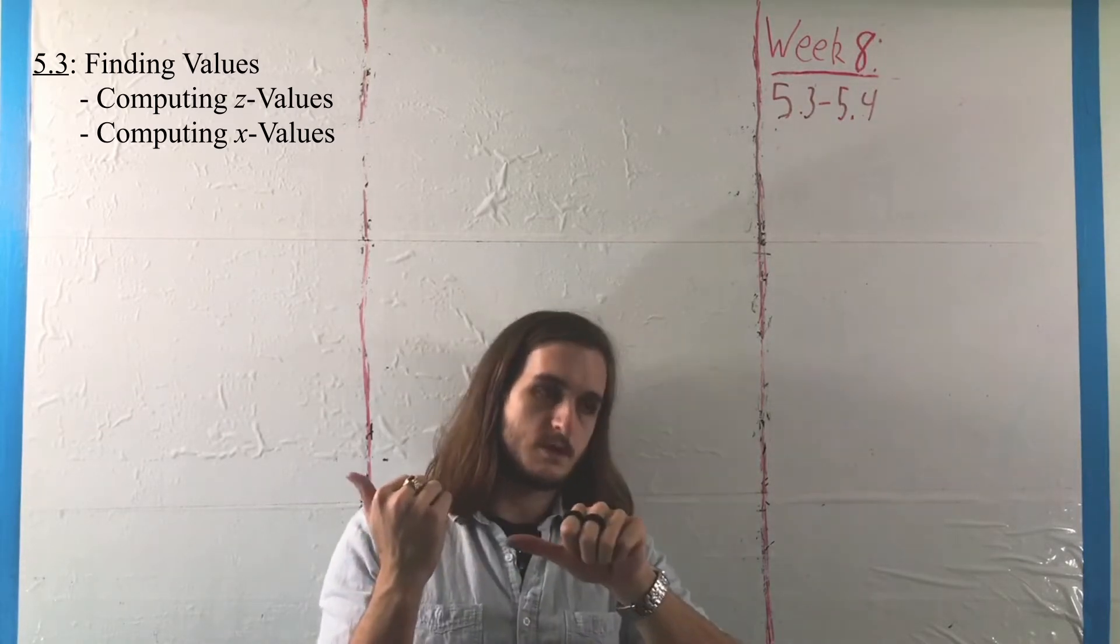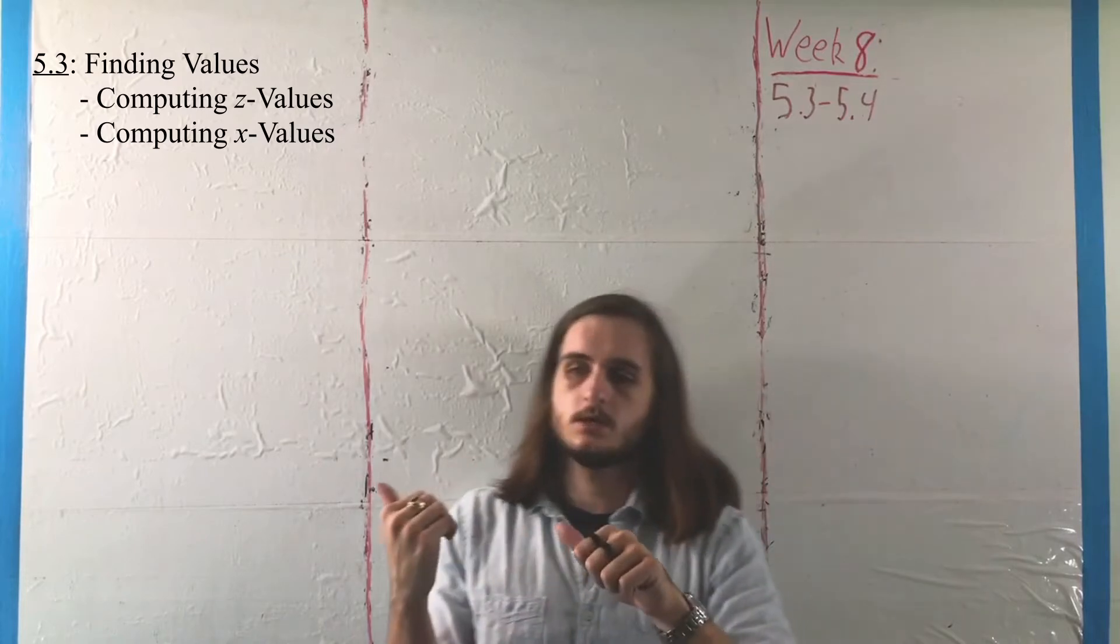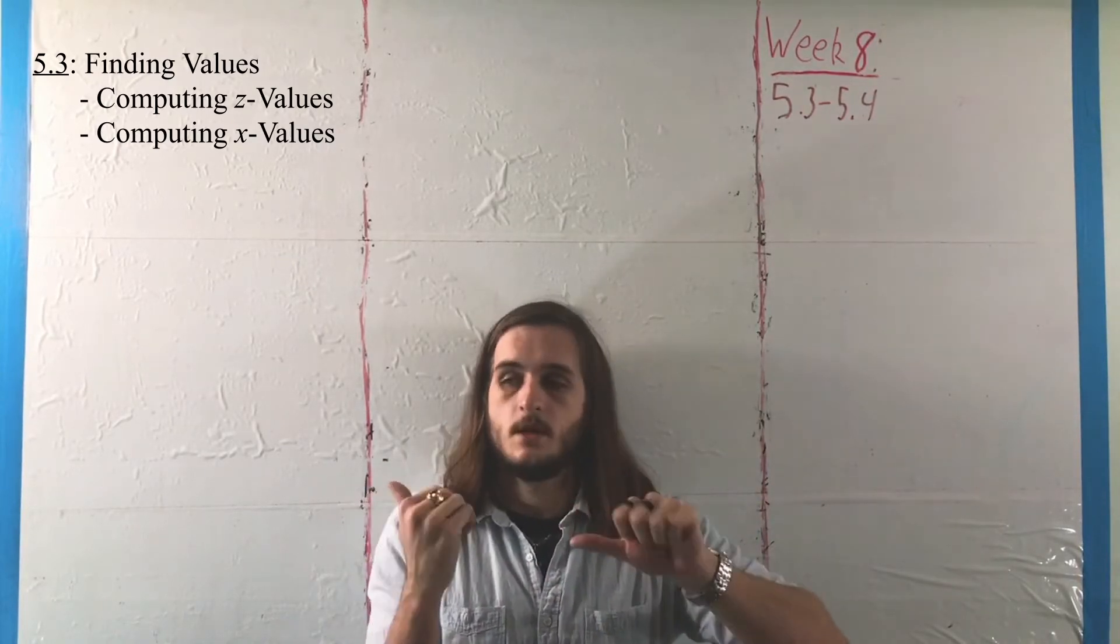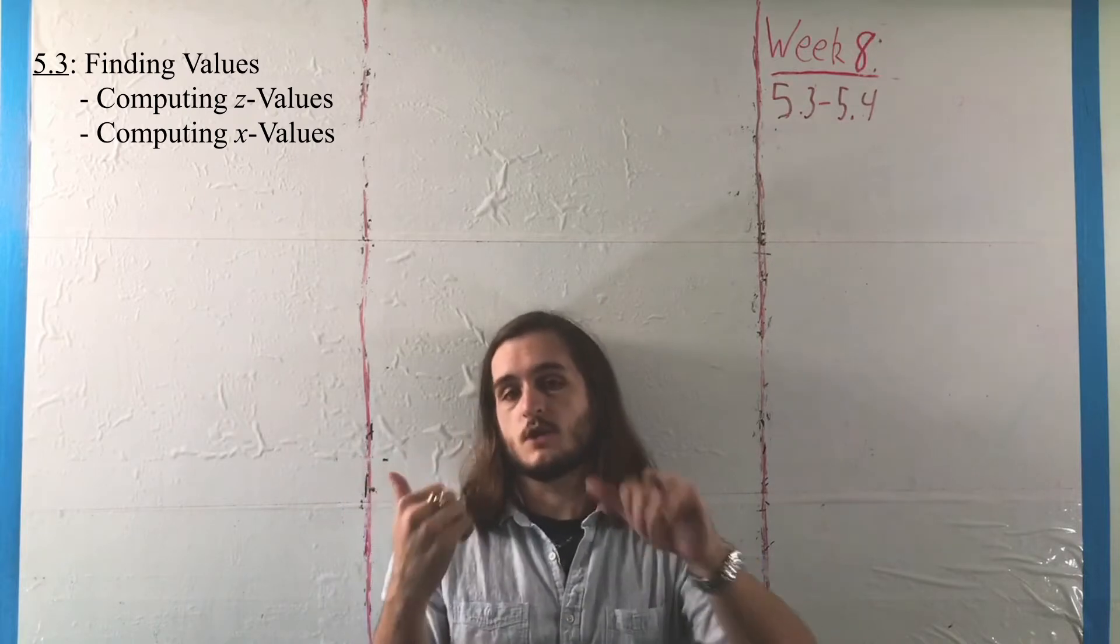and flip it back to being able to get values corresponding to areas, that is, values corresponding to percentiles, or just z-scores corresponding to areas on standard normal, or values for percentages in terms of a general normal distribution.